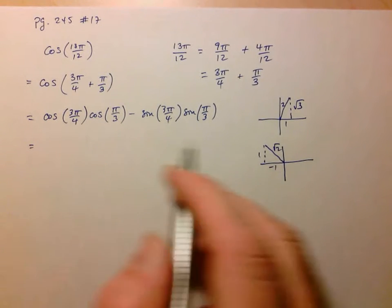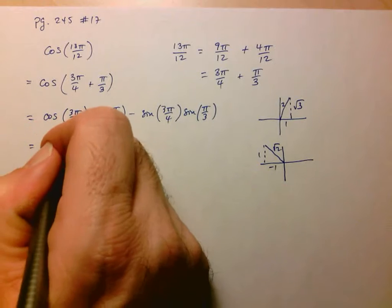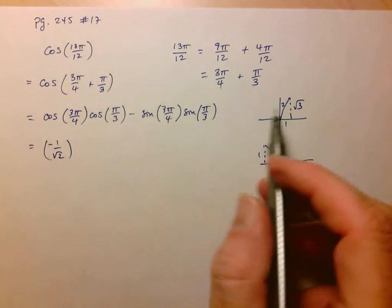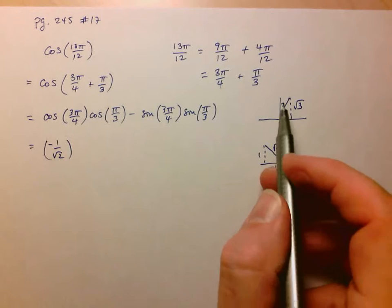So cos of 3π over 4 is negative 1 over root 2. Cos of π over 3 is just going to be 1 over 2.